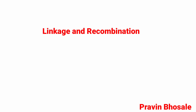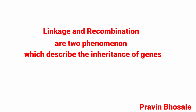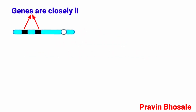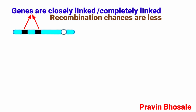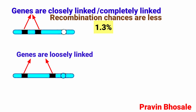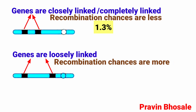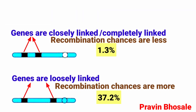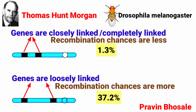Morgan's experiment on Drosophila. Linkage and recombination are two phenomena which describe the inheritance of genes. If genes are closely linked — completely linked — then recombination chances are less, that is 1.3%. And when genes are loosely linked, recombination chances are more, that is 37.2%. This conclusion was proved by Thomas Hunt Morgan while working on Drosophila melanogaster.